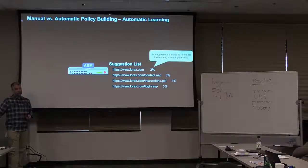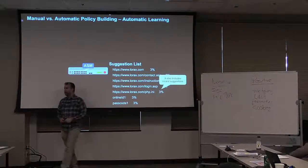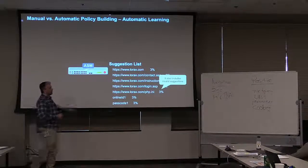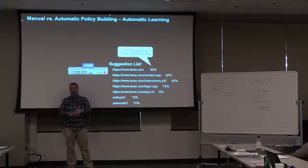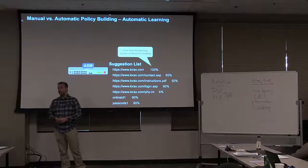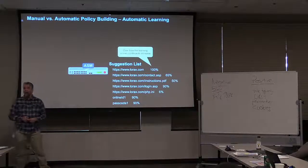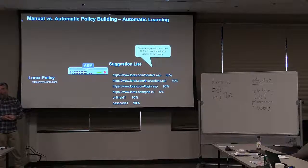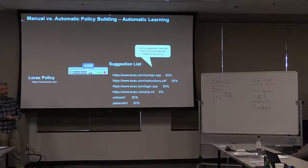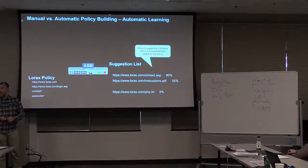Then we have automatic learning, which is a little different but very similar. I have suggestions for URLs, parameters, invalid requests — same thing. Requests come in, learning scores go up, based on requests from lots of users over lots of IP addresses and sessions, over a long period of time. Eventually, items hit 100%. In automatic learning, those items that hit 100% are automatically added as acceptable positive security for the security policy.